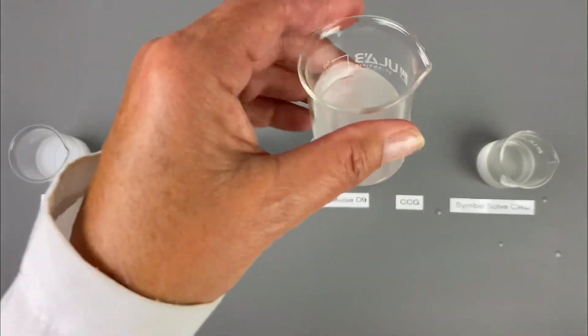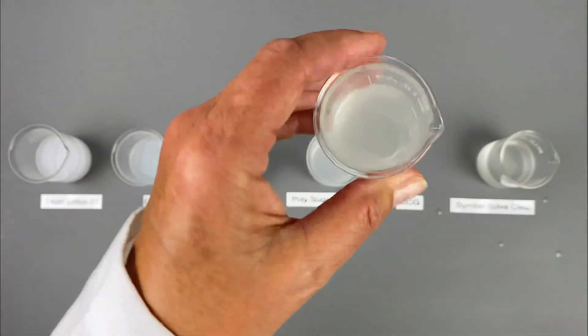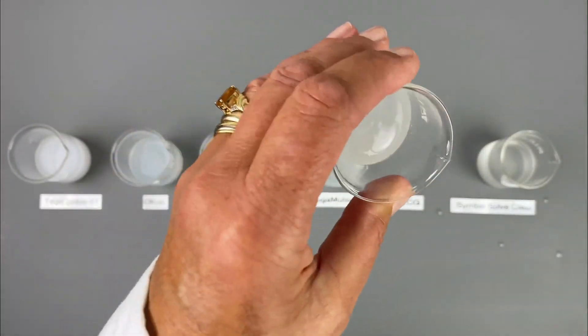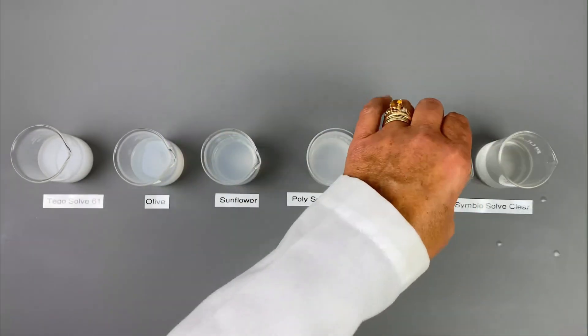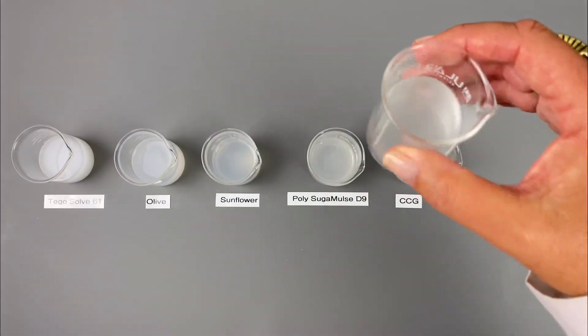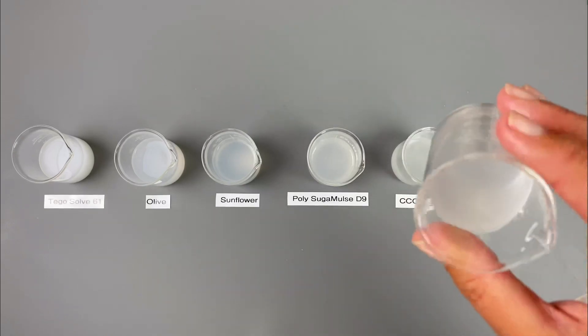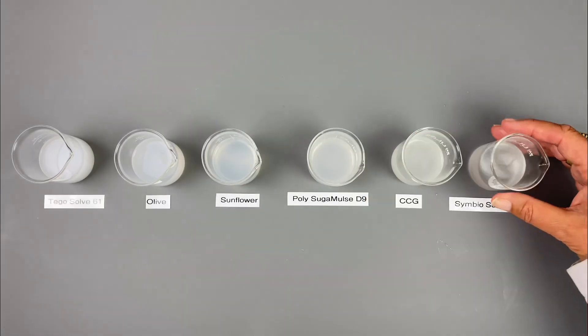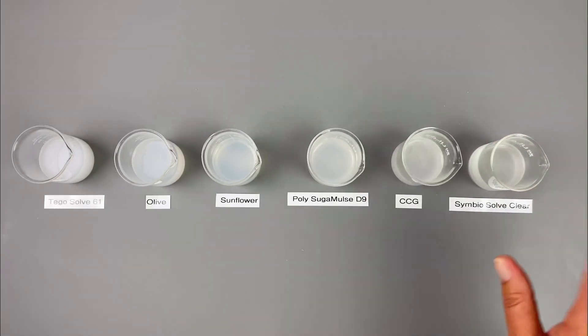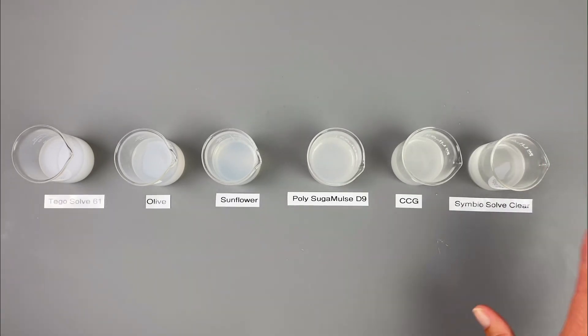The CCG has a little haziness, but there's more transparency and it did a great job. Symbiosolv Clear is the clearest one. It has the most clarity and did the best job as far as clarity, but it also solubilized essential oils well.